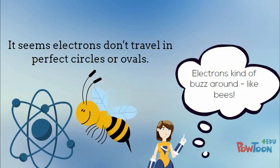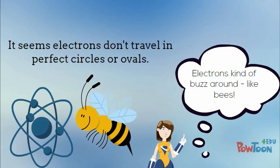It seems electrons don't travel in perfect circles or ovals. Electrons kind of buzz around like bees.